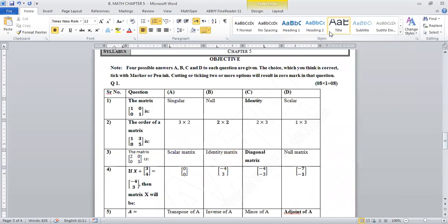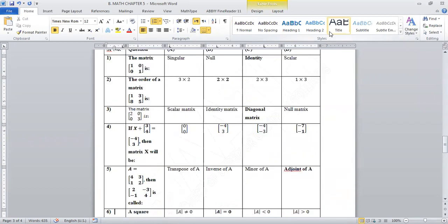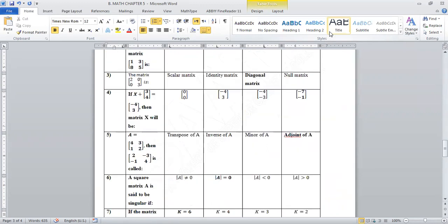The matrix [1 0; 0 1] is called an identity matrix. The order of matrix [1 3; 8 5] is two by two. The matrix [2 0; 3 0; 3] is a diagonal matrix. If X is equal to [3 4] equals [-4 3], then the resulting matrix X will be [-7; -1].